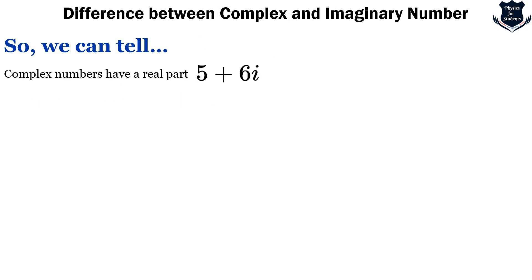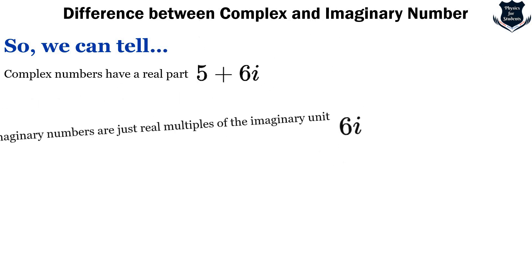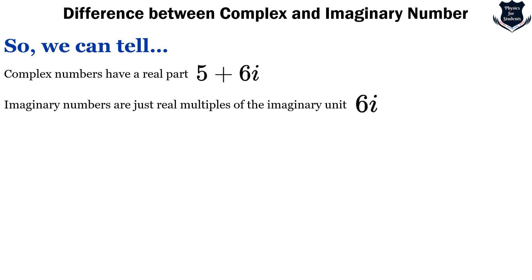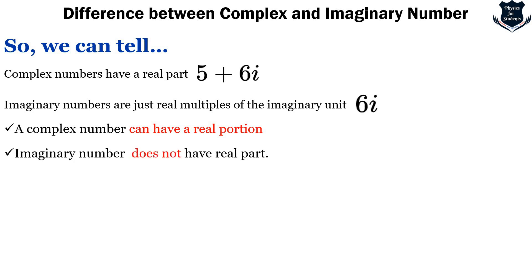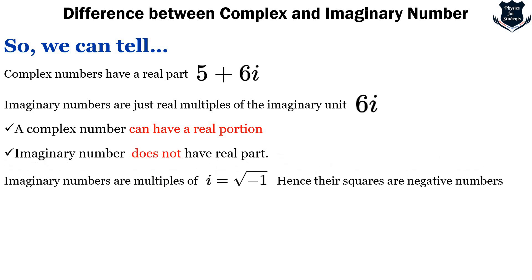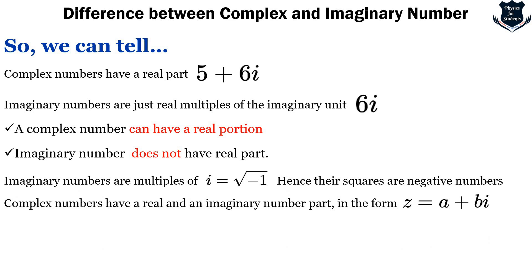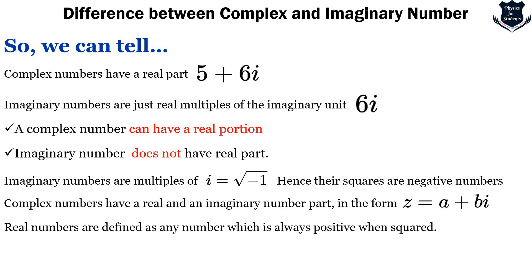To quickly summarize: complex numbers have both a real and imaginary part, for example 5+6i. Imaginary numbers are just real multiples of the imaginary unit, for example 6i. A complex number can have a real portion while an imaginary number does not. Imaginary numbers are multiples of i, which equals the square root of −1, so squaring them gives a negative number. Complex numbers take the form z = a+bi.